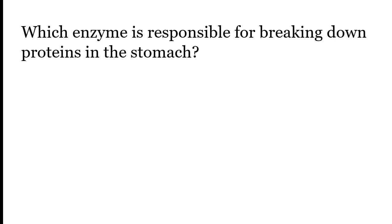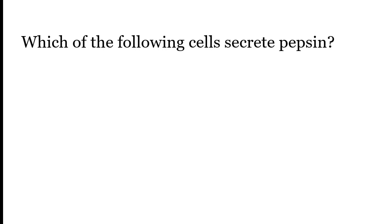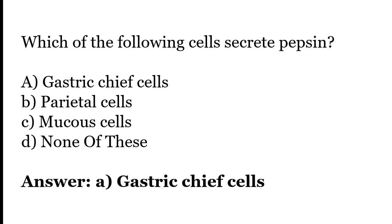Which enzyme is responsible for breaking down proteins in the stomach? Options: pepsin, amylase, lipase, trypsin. The correct answer is option A — pepsin enzyme is responsible for breaking down proteins in the stomach. Which of the following cells secrete pepsin? Options: gastric chief cells, parietal cells, mucus cells, none of these. The correct answer is option A — gastric chief cells secrete pepsin.